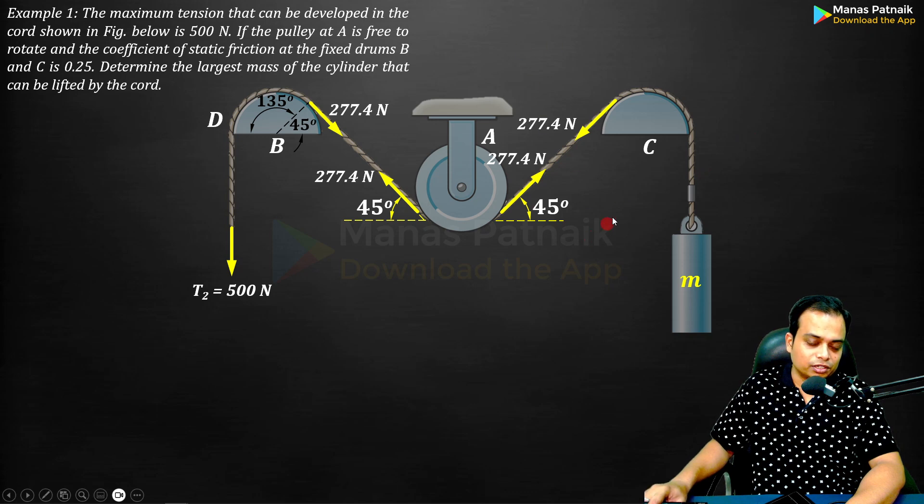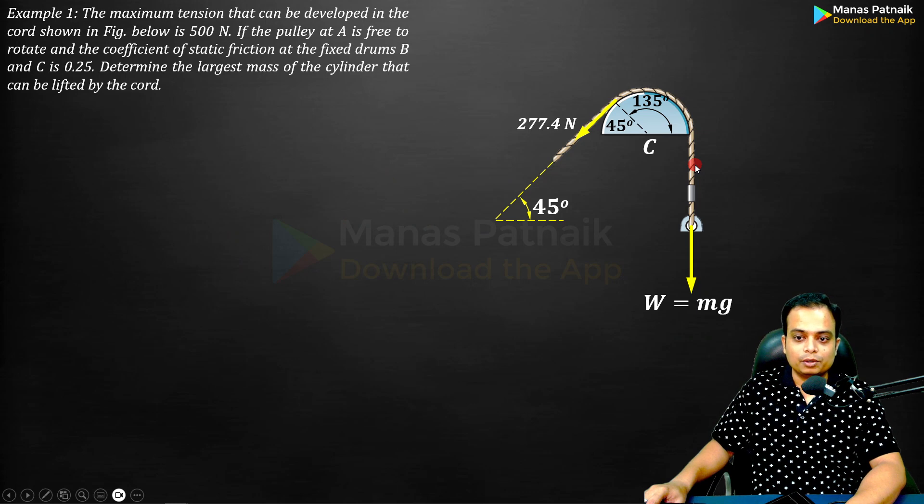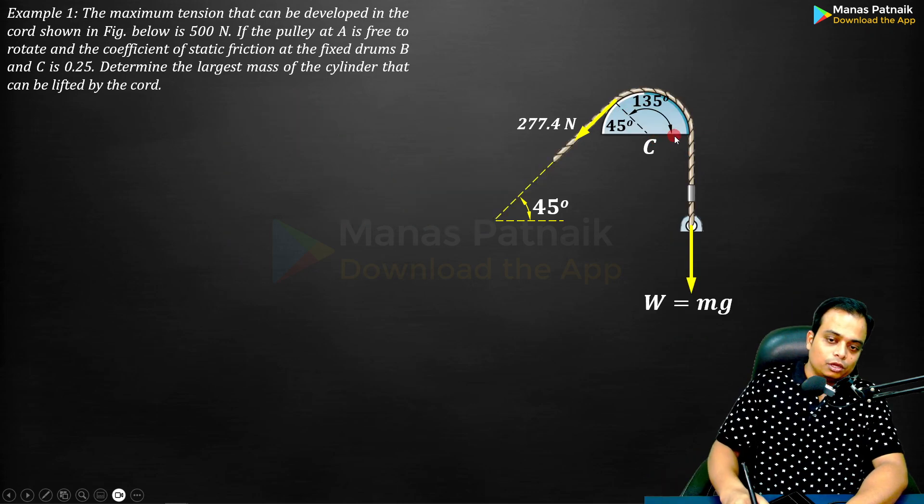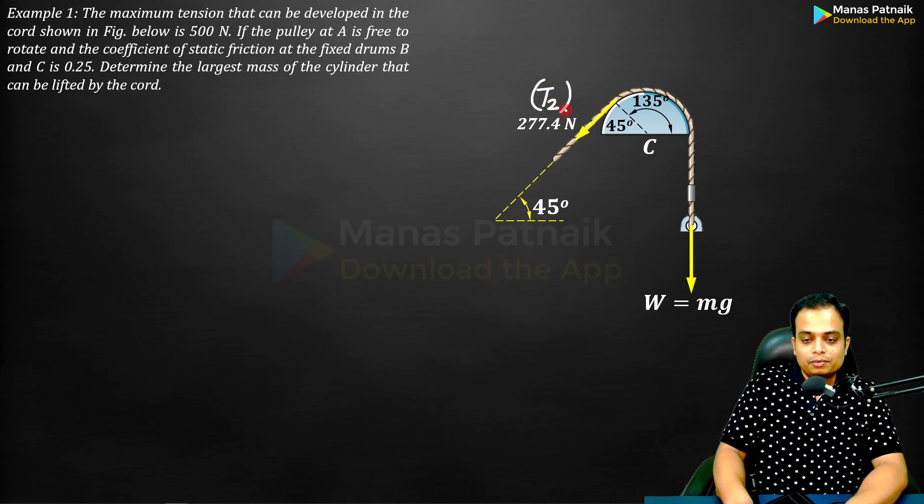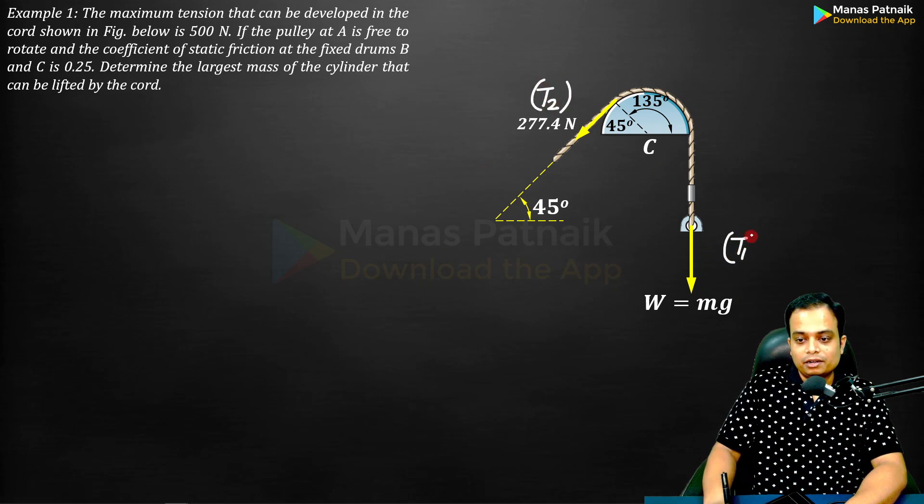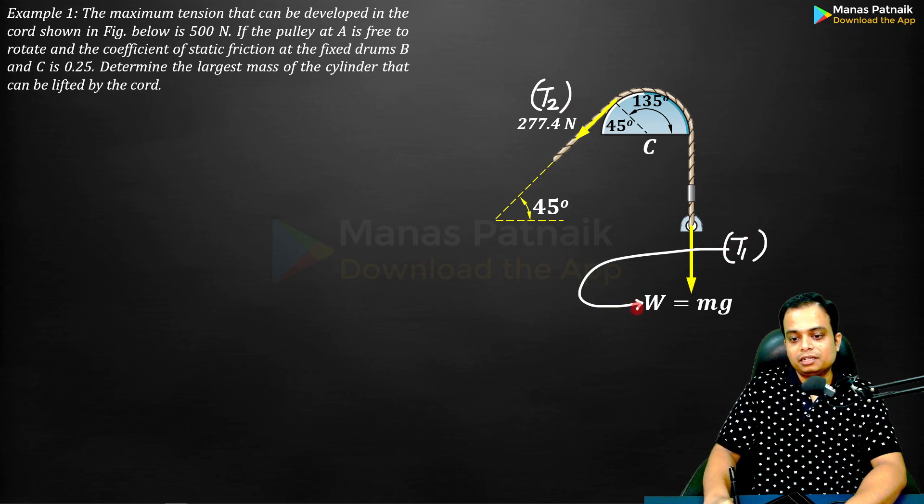Let me consider the free body of this drum C and the chord. Again, the same thing - angle is going to be 135. This is the tighter side T2, this is the slacker side T1.